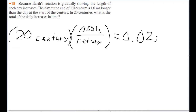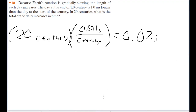That's a lot of extra free time — you could compose a symphony with that. But now the question becomes, how do we use this to actually answer the question? How do we find the total of the daily increases in time, as confusingly phrased as that is?